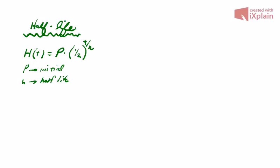So you want to find the half-life formula for anything, here's a basic function: H(t) equals the initial amount of what substance you have times the base of one-half raised to the exponent of t over h.